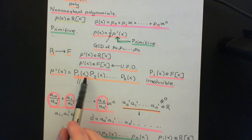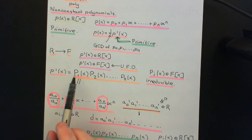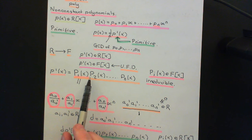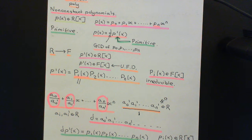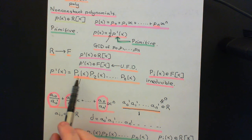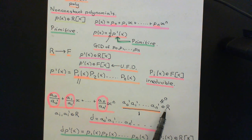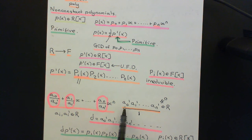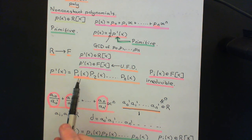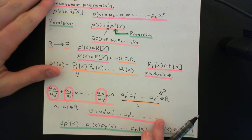Now how did we modify these to change them from being capital P₁(x), P₂(x), all the way up to capital Pₙ(x), to now being lowercase p̄₁(x), p̄₂(x), etc.? Well, we didn't actually do that much to them. All we did is multiply them all by some element of the unique factorisation domain R. For instance, P₁(x) was multiplied by this element here to clear the denominator.